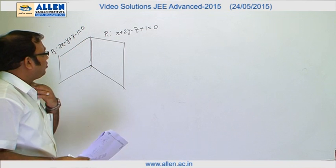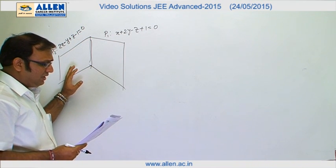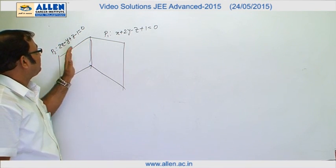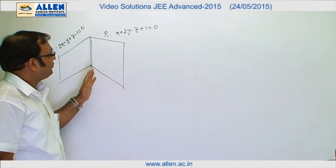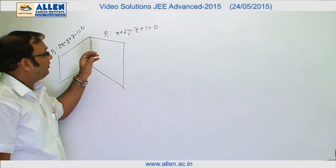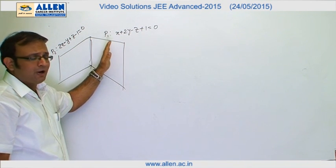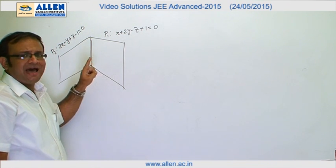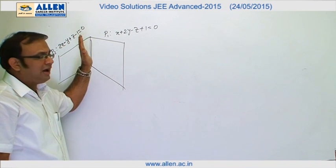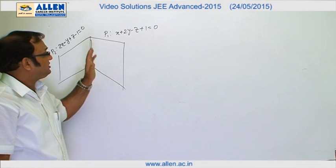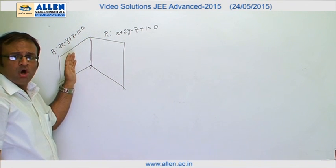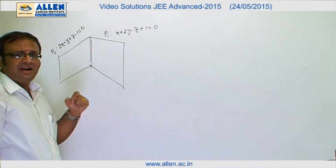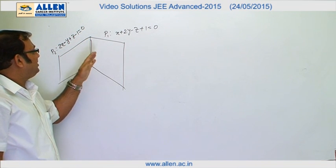The question states there is a line L, and all points on line L are at a constant distance from P1 as well as from P2. This means the distance of all points on line L from plane P1 is constant, so line L must be parallel to plane P1. Similarly, line L must also be parallel to plane P2.